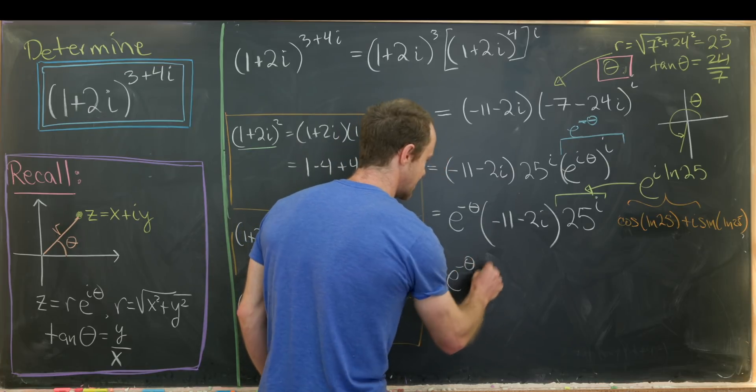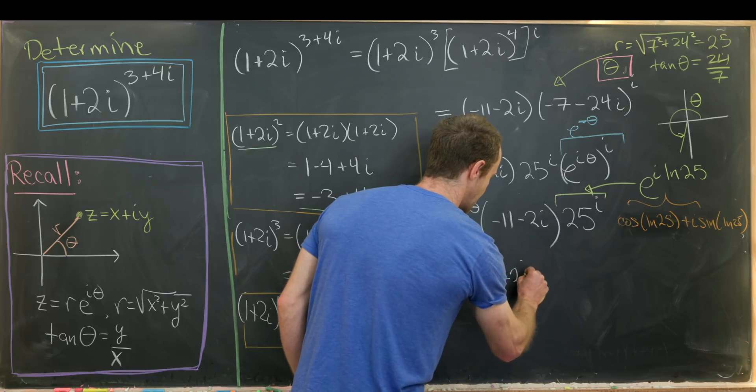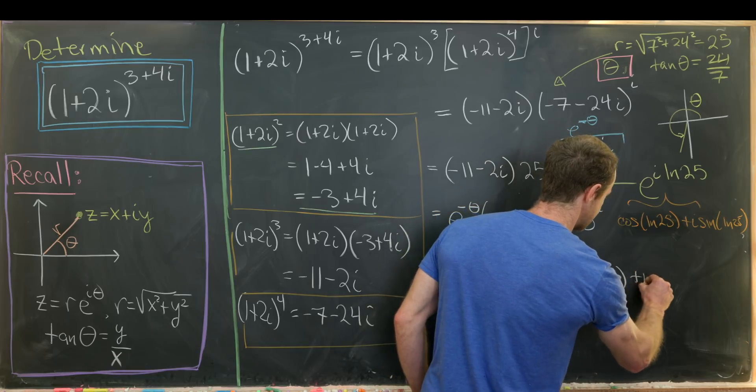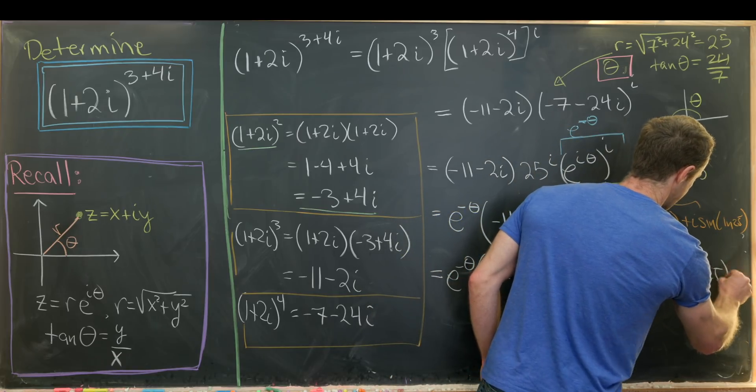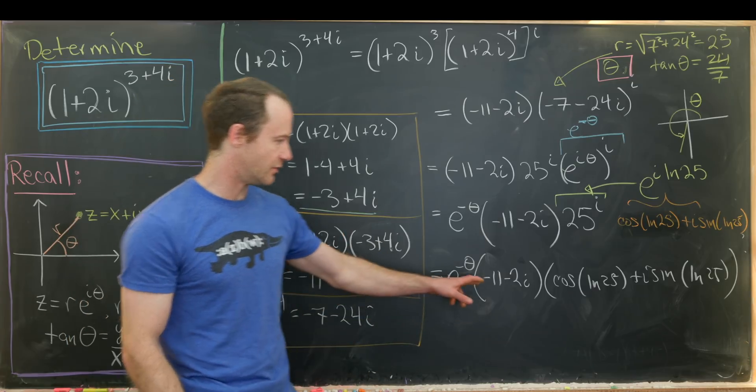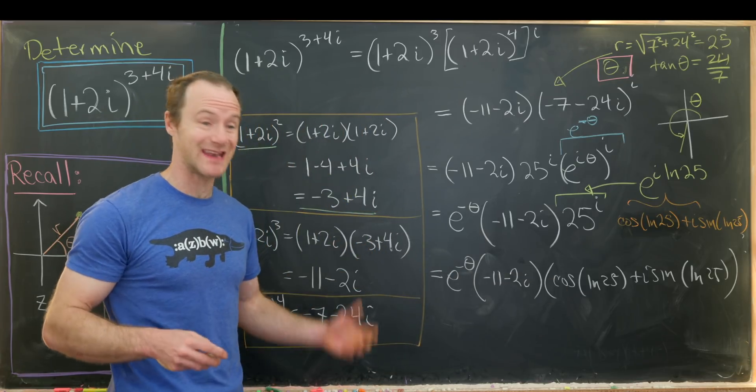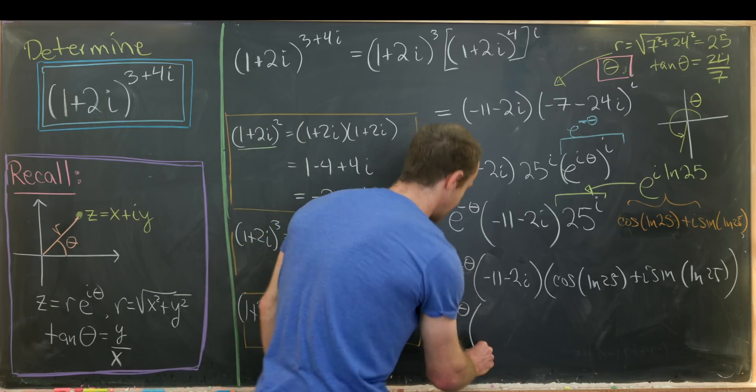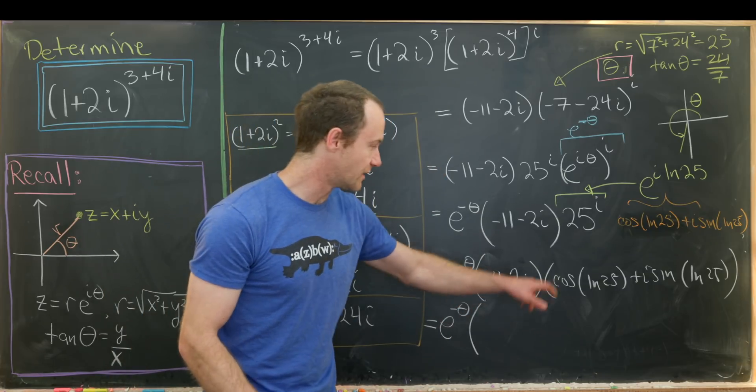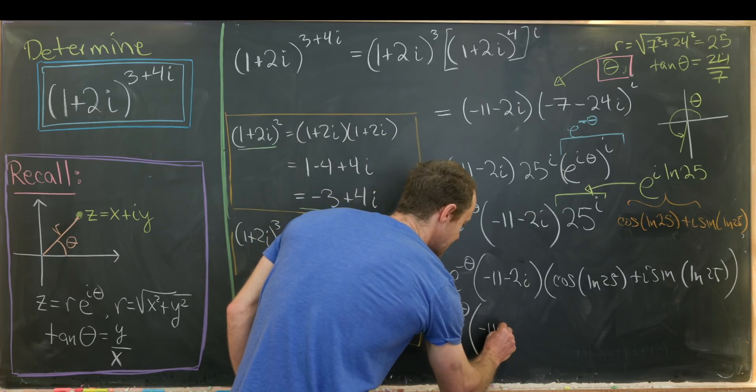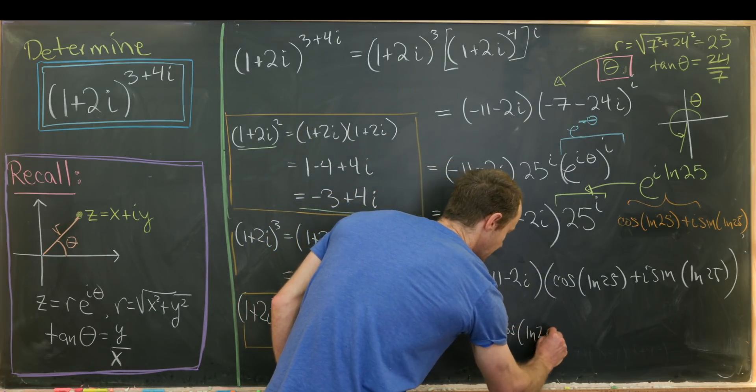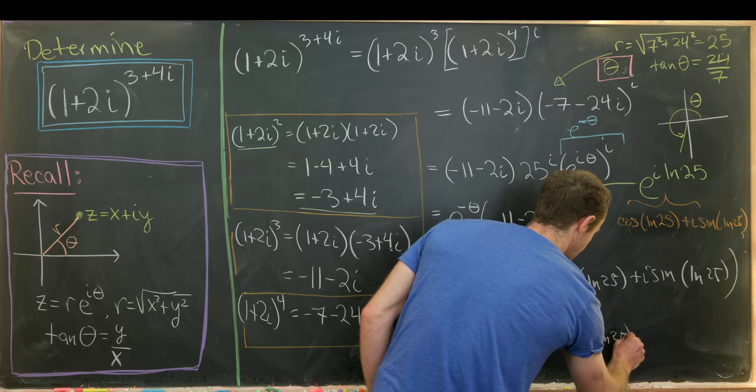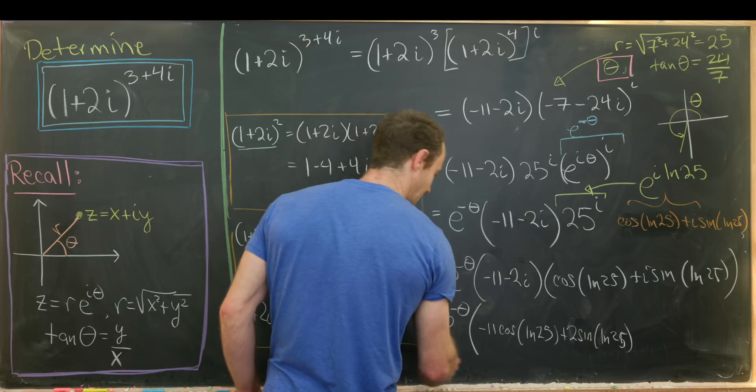So let's see. We have e to the minus theta first and then minus 11 minus 2i. And then times the cosine of the natural log of 25 plus i times the sine of the natural log of 25. Now we can start putting this together. Maybe we could multiply out these two complex numbers that are now in rectangular form. So we have this e to the minus theta out front. I might leave that out front for the whole time. And then for my real part over here, I'll have minus 11 times the cosine of the natural log of 25. And then I'll have plus 2 times the sine of the natural log of 25. So just like I said, that is my real part.